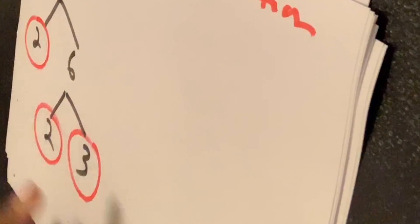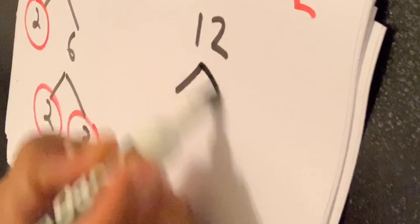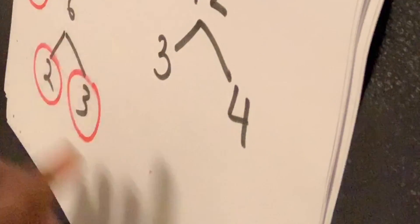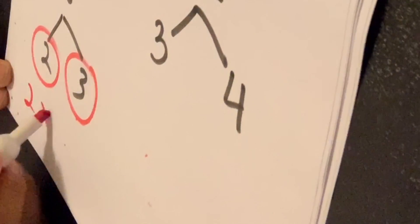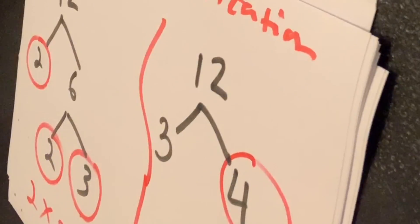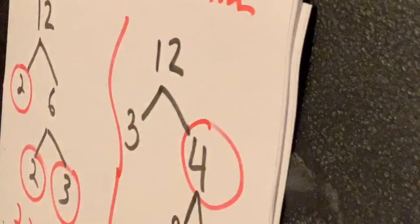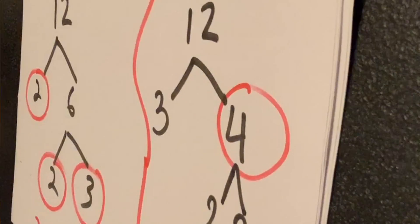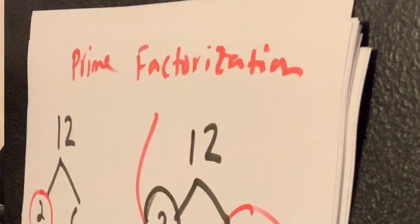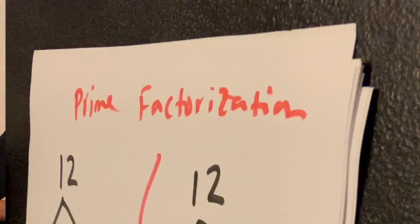So is two times two times three the prime factorization of twelve? Yes. Can you start differently — say three times four instead of two times six? You still get the same answer. Four can be broken into two times two, so you still get two times two times three. Circle the prime numbers — two, two, and three. They're the same!